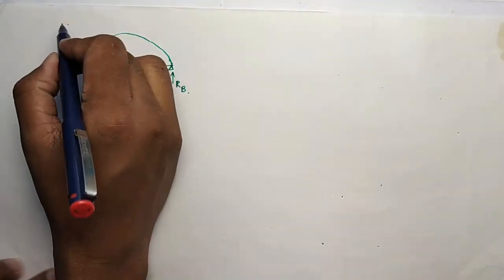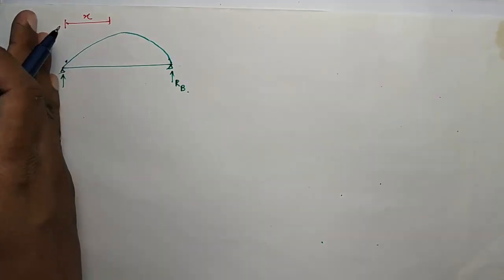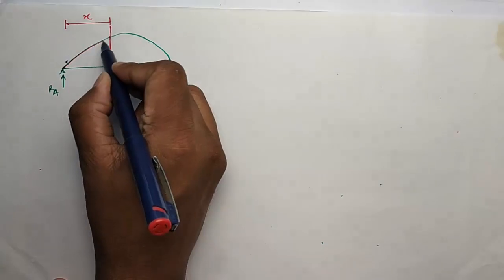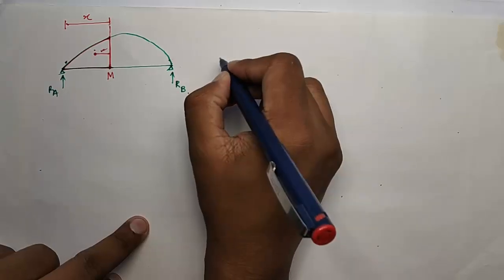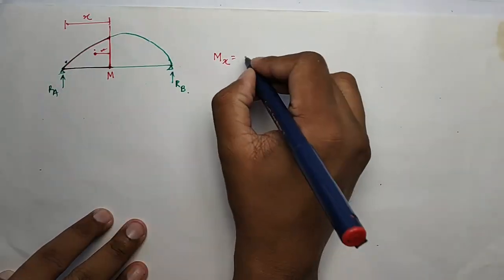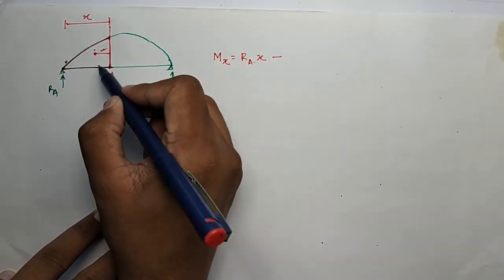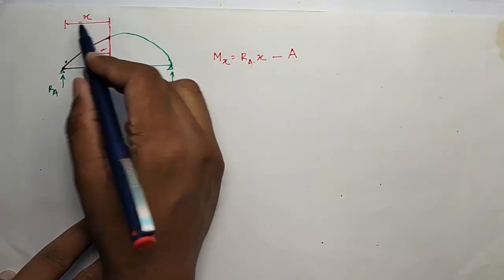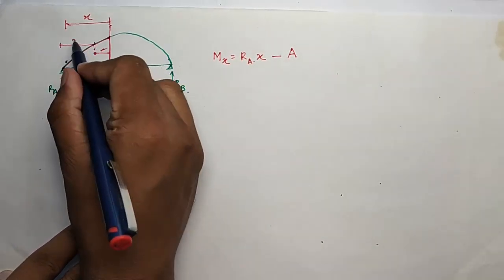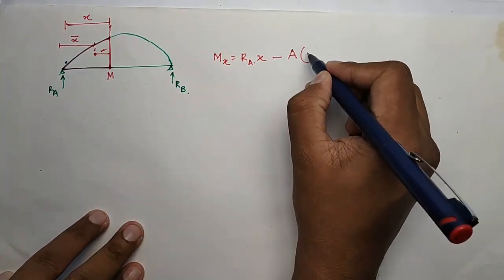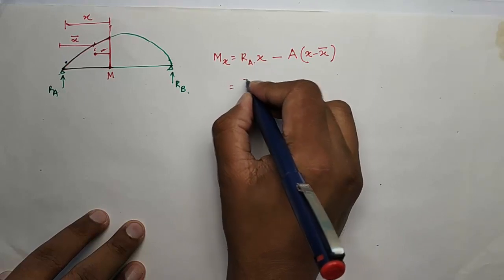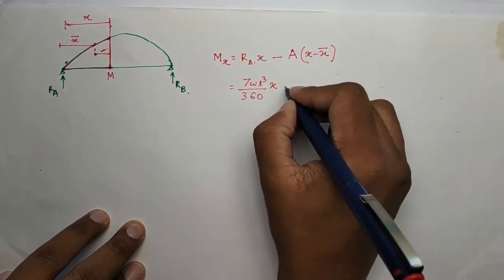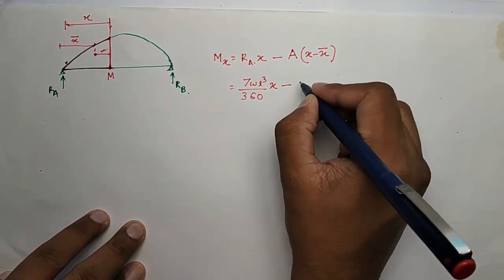Let's try to find the deflection at any distance x from the left side. At this point, the moment value will be equal to the deflection of the actual beam. For this, we have to determine the CG. Write down the moment. Moment at distance x will be RA into x minus area of this portion A, into x minus x bar. Put the value of RA, which is 7WL cubed by 360EI into x minus A into x minus x bar.